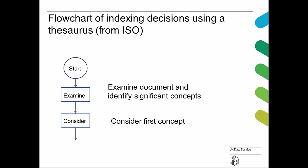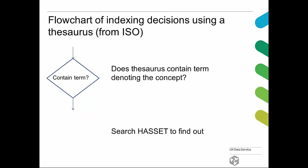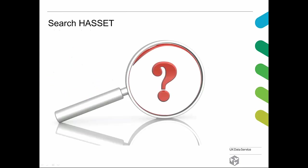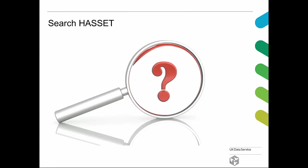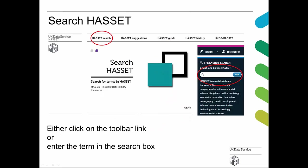The flowchart begins: examine the document and identify significant concepts, and consider the first concept. Does the thesaurus contain the term denoting the concept? We need to go to HACET to find out — you'll see it on your input screen. To search HACET, either click on the toolbar link or enter the term in the search box. The quickest route is to use the search box. The link on the toolbar provides you with an option to browse the whole thesaurus if you do not have a specific term in mind.